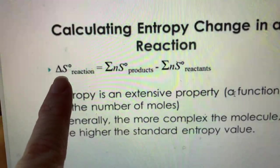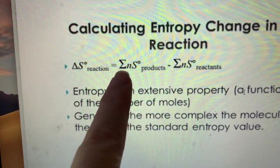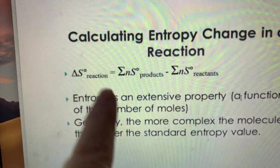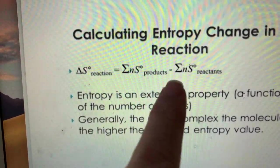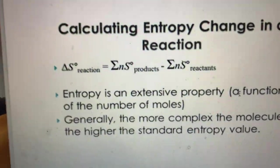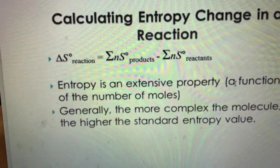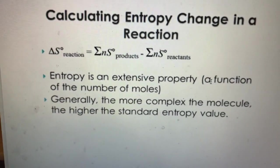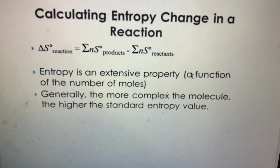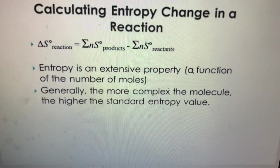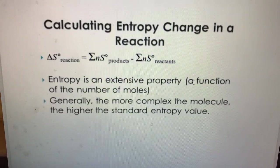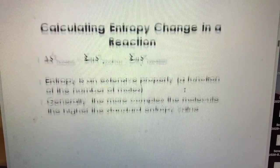To do this we are going to use this equation here, which is very scary looking but not difficult at all. To find your entropy, you're going to take the total of the entropies from your products, subtract from that the summation of the entropy from your reactants, and I'm going to walk you through some of these. Entropy is an extensive property which means that it does matter how much of the substance you have.